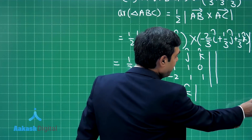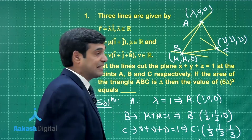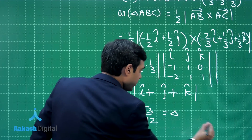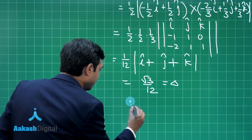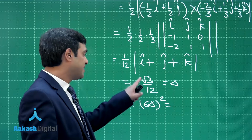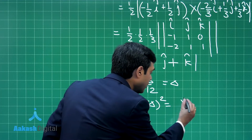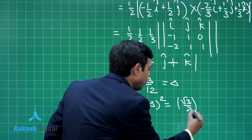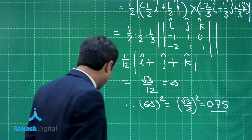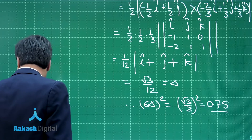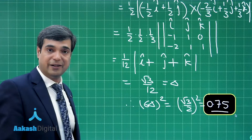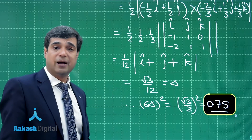The question asks for 6δ whole square. With δ = √3/12, we get 6δ = √3/2, so 6δ whole square equals (√3/2)² = 0.75. The correct answer for this question is 0.75.